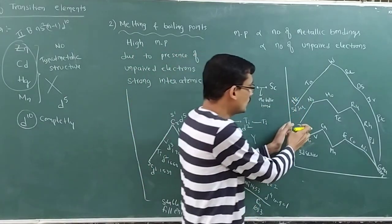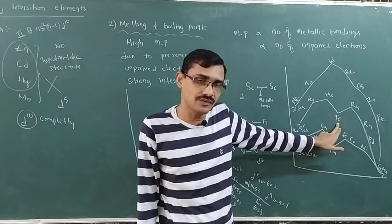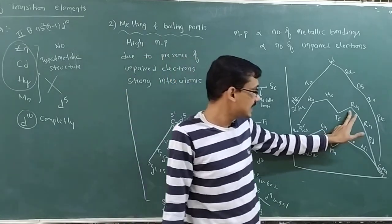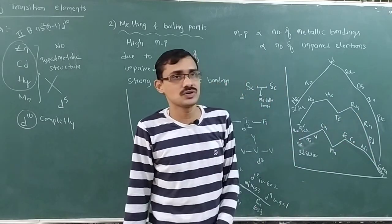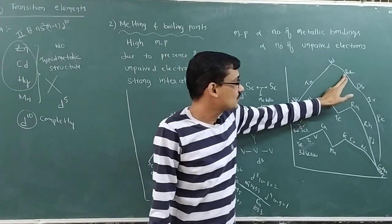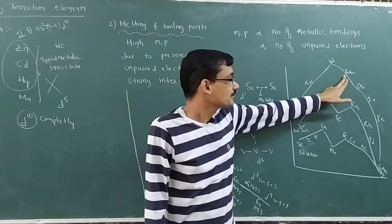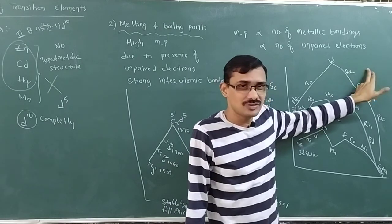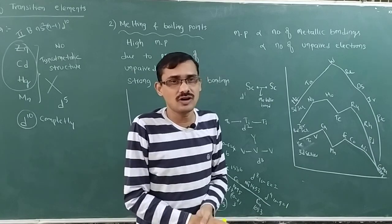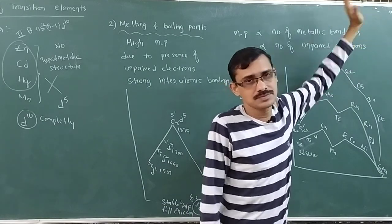In the 5D series, tungsten shows increasing melting point due to increasing unpaired electrons. After this, rhenium has a half-filled configuration causing metallic bonds to decrease. However, there is no sudden increase after rhenium as seen in lighter series — because of the large atomic size in the 5D series, metallic bondings do not increase as expected. This is an exception case.